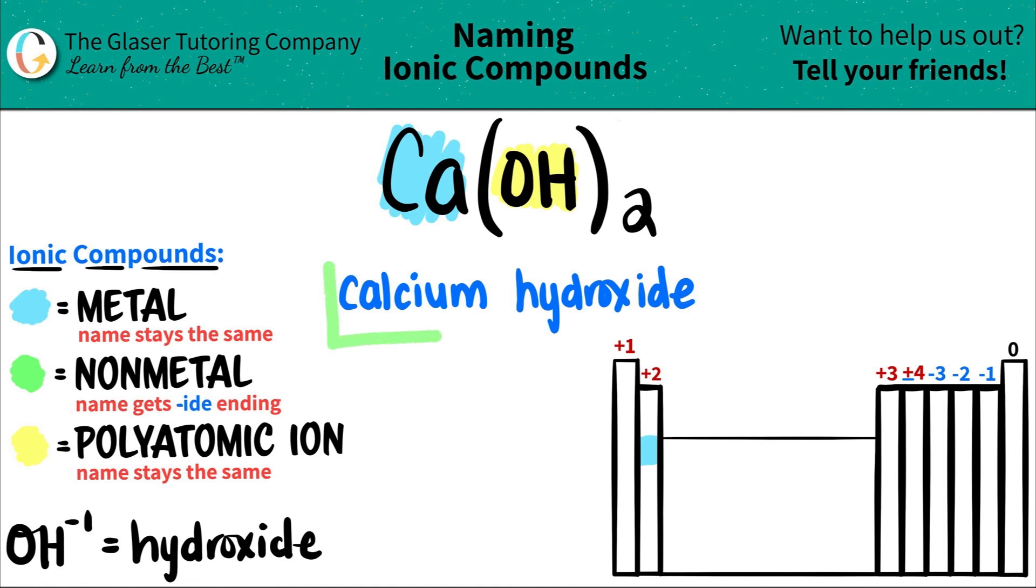So we're done. So Ca(OH)₂ is calcium hydroxide. And that's it.